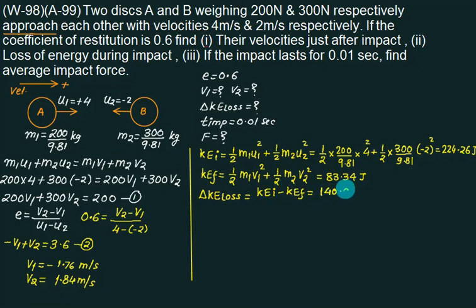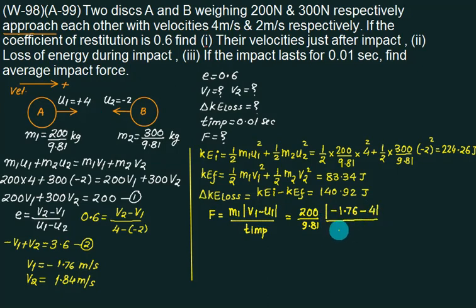So F first, we can write M1 into mod of V1 minus U1 divided by time of impact. M1, again you have to take 200 divided by 9.81. Remember your V1 is minus, you have to take minus 1.7 minus as per formula. U1 is 4 divided by time of impact 0.01. So this one is 200, 9.81, minus minus is 5.76 divided by 0.01. This force is very, very large force. Is it 11743.11.